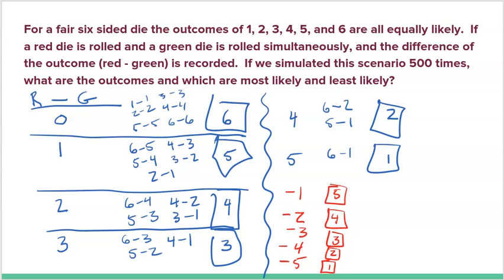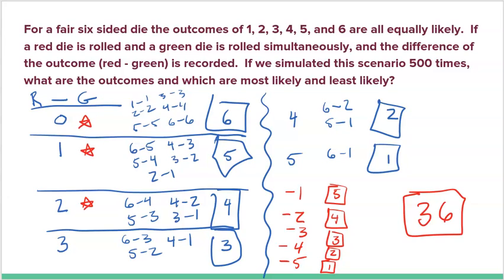Now that I understand all the different outcomes, how many total outcomes are there? Adding them all: six plus five plus four plus three plus two plus one plus five plus four plus three plus two plus one equals 36 total outcomes. Six of them result in a difference of zero — more than any other — so a difference of zero is most likely, occurring six out of 36 times.